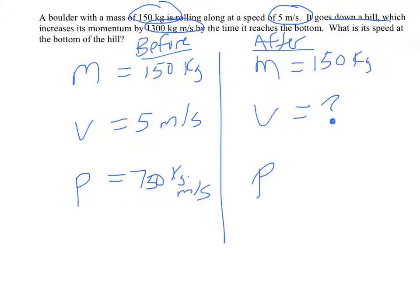And according to this problem, the momentum increased by 1300. So I'm going to write delta p, meaning change in momentum, is plus 1300 kilogram meters per second. So it was 750 to start at the top of the hill, it gained 1300, so at the bottom of the hill it's going to have 2050 kilogram meters per second.